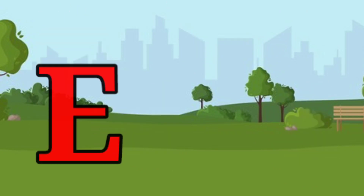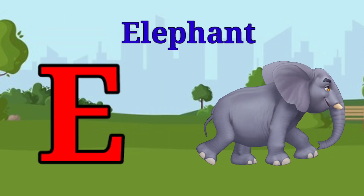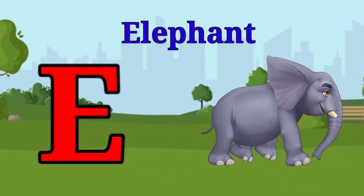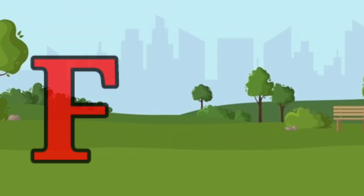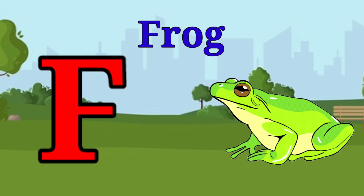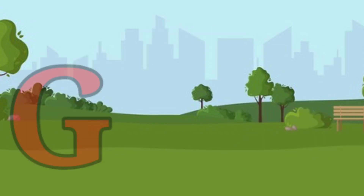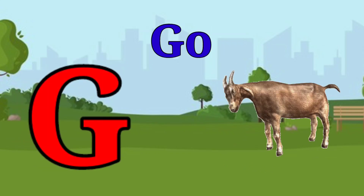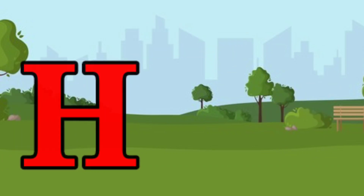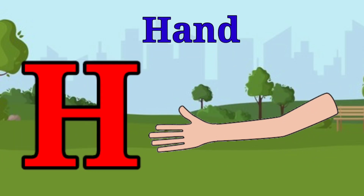E is for elephant, e-e-elephant. F is for frog, f-f-frog. G is for goat, g-g-goat. H is for hand, a-a-hand.